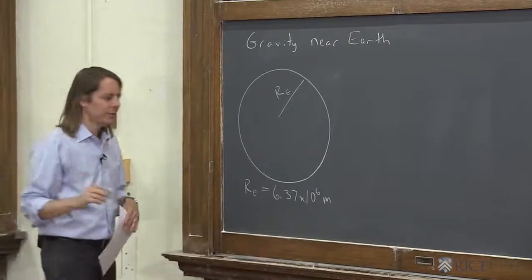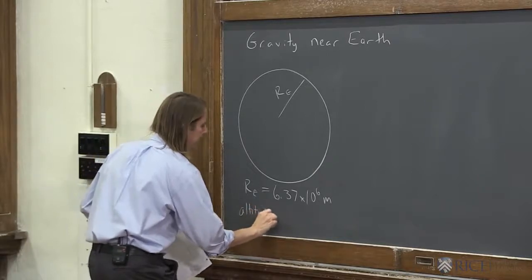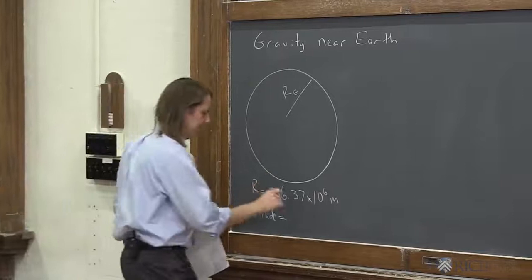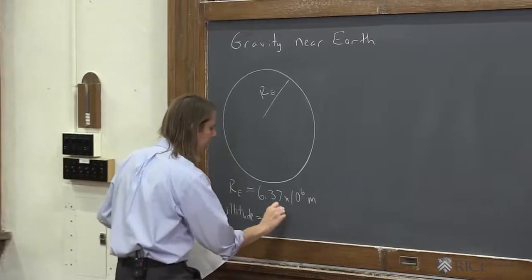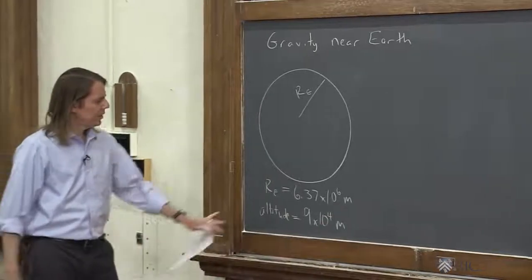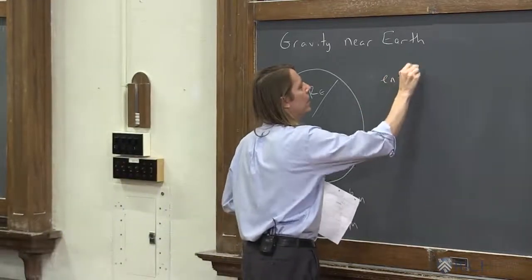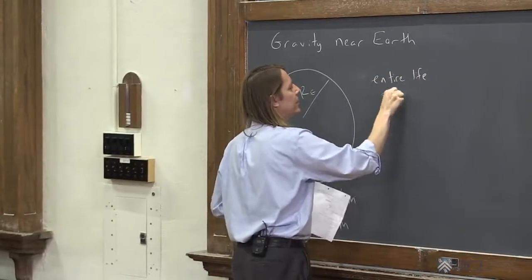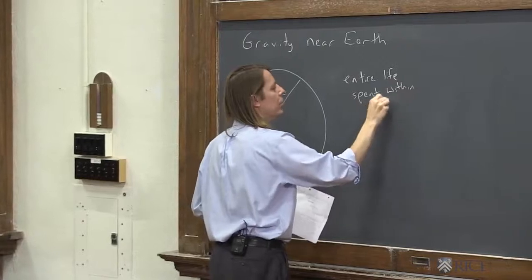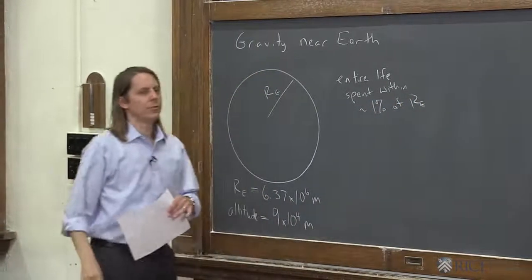The altitude of a commercial plane, which is probably the highest most of us ever get speaking in terms of elevation, is 9 times 10 to the 4th meters. So what you can see is your entire life is spent within about 1% of our E.